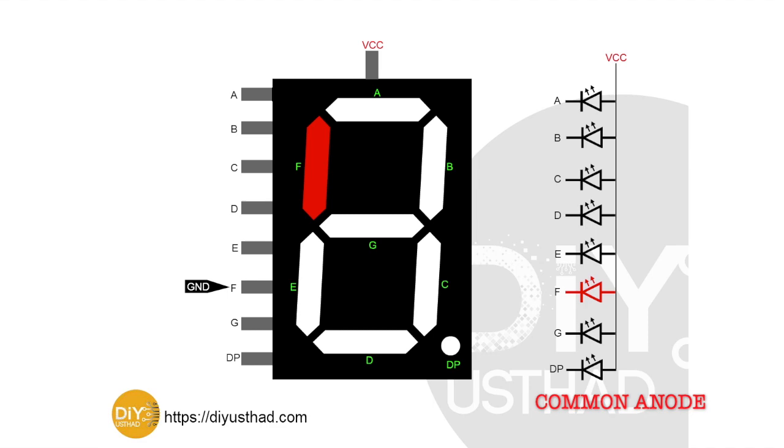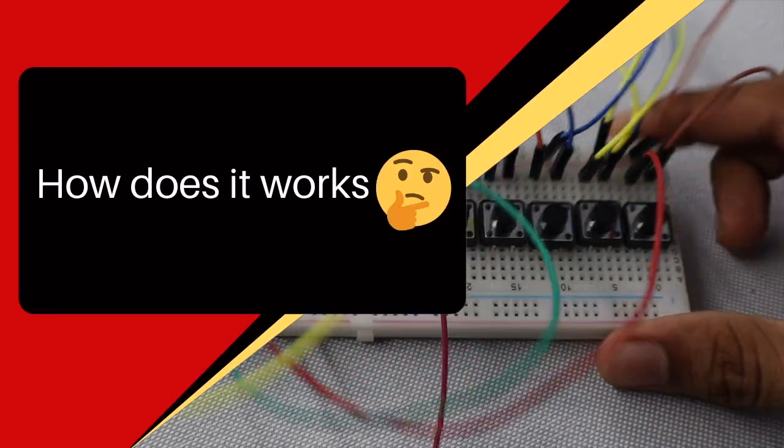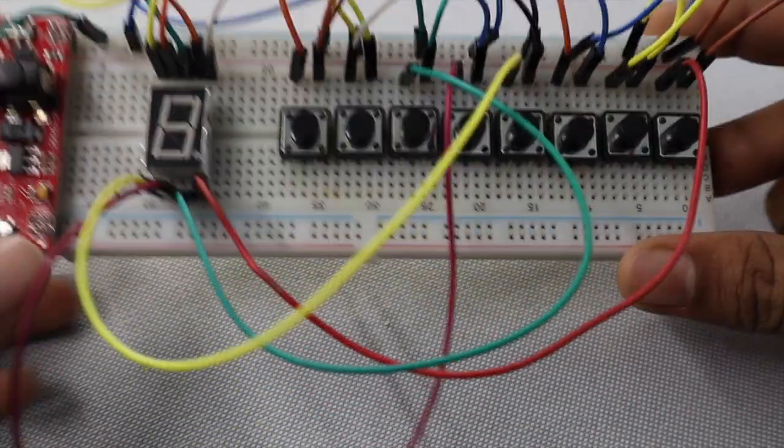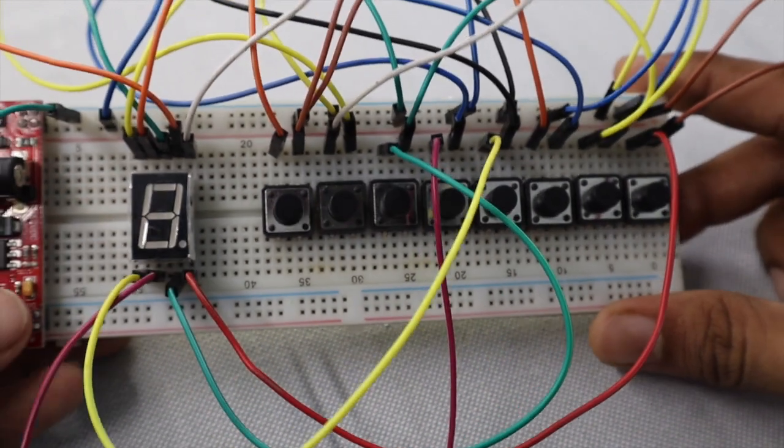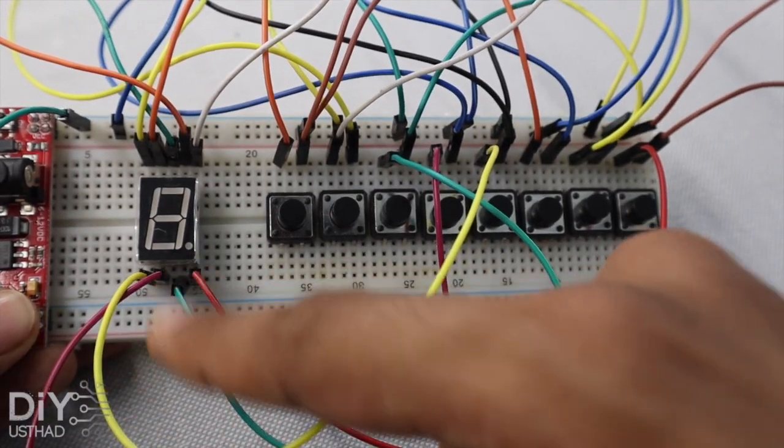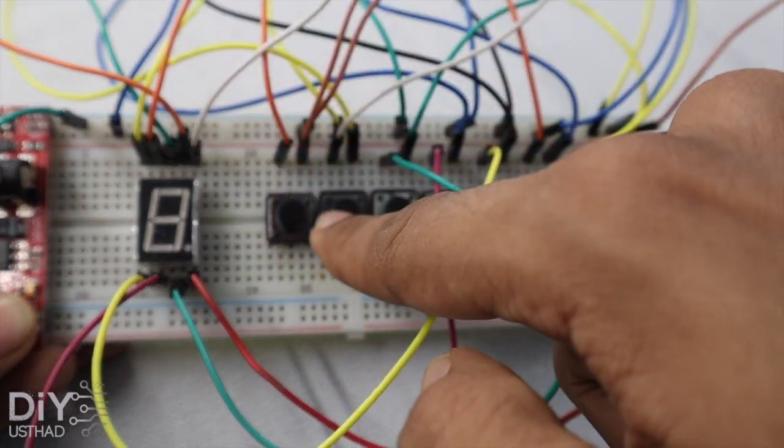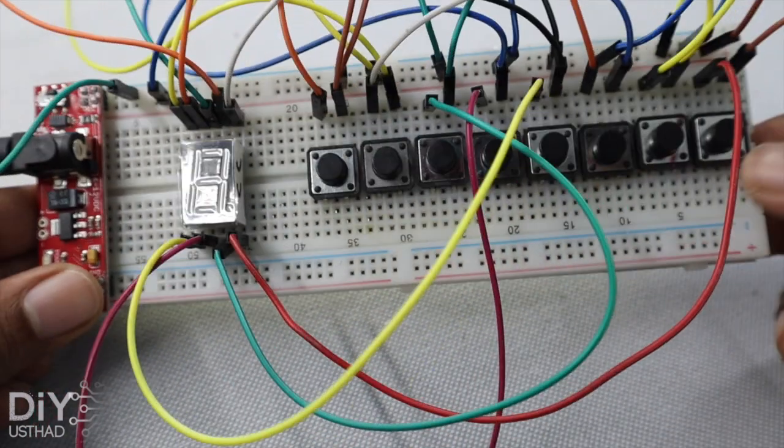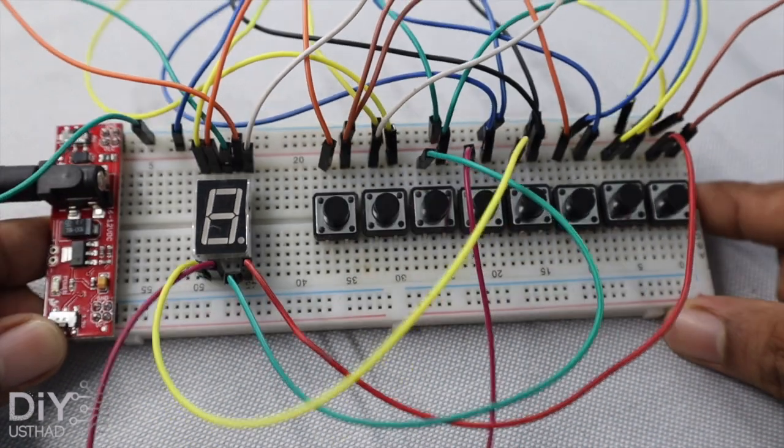To demonstrate the seven segment display working, I've made a small circuit where I've used a common cathode seven segment display and connected the common pin to ground and all other pins to 3.3 volts via a push button. So let me turn on the power.